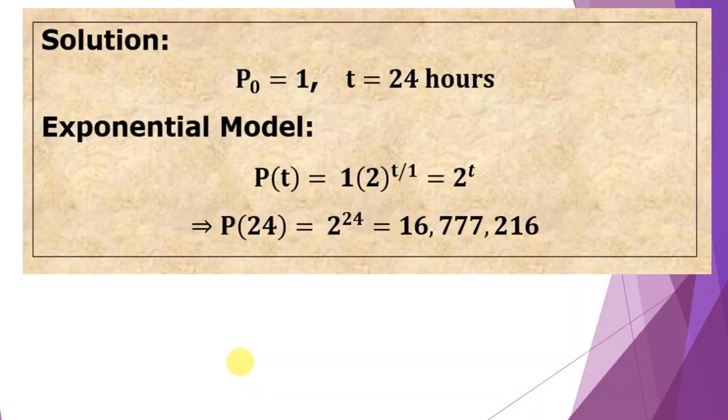Well, P₀ is one bacterium, the initial amount at T = 0. And our T is 1 day, or let's convert it to hours: 1 day = 24 hours. Then we have our exponential model. P(t) = P₀(2)^(t/1 hour), which simplifies to P(t) = 2ᵗ.